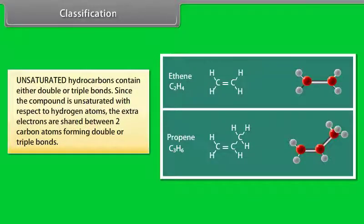Unsaturated hydrocarbons contain either double or triple bonds. Since the compound is unsaturated with respect to hydrogen atoms, the extra electrons are shared between two carbon atoms forming double or triple bonds.